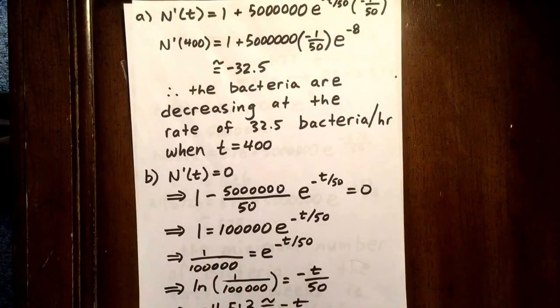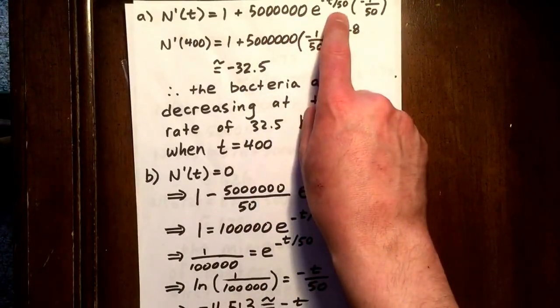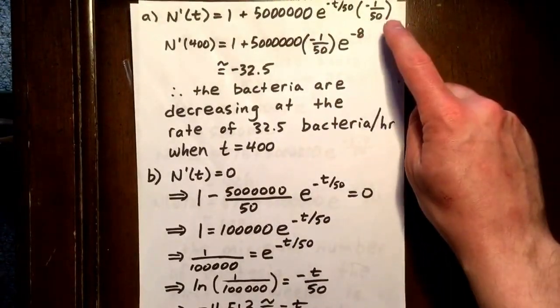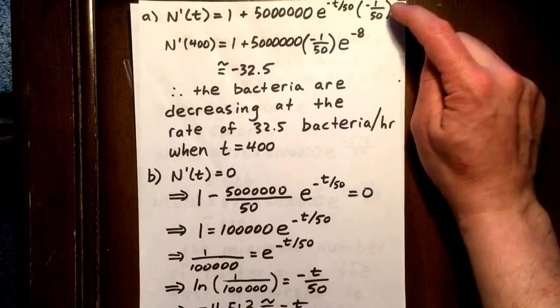And now we determine the derivative of that second term. Well, the derivative of that second term is 5,000,000 e to the negative t over 50 times the derivative of negative t over 50 with respect to t, and that is negative 1 over 50. So this is our rate of change.